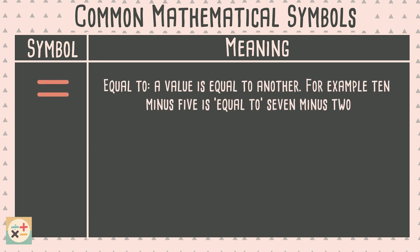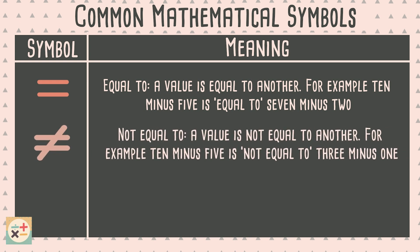The equal to sign is used to show that one value is exactly the same as another. When there is a diagonal line through an equals sign, it means that one value is not the same as another.